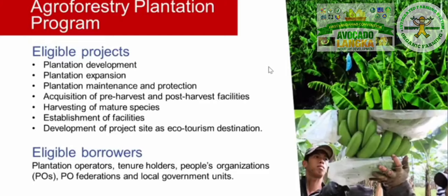Loan assistance under the APP can be utilized to finance the cost of tree plantation and agroforestry projects, including plantation development, expansion, maintenance and protection, acquisition of pre-harvest and post-harvest facilities, harvesting of mature species, establishment of facilities, and development of a project site as an ecotourism destination. Credit assistance is extended to plantation operators, tenure holders, people's organizations, federations, and local government units.